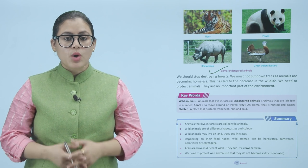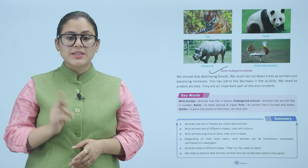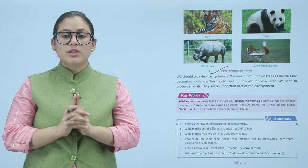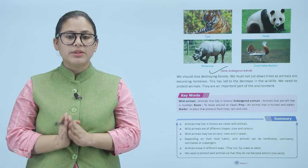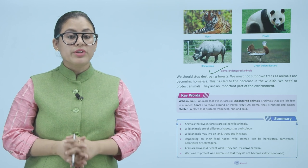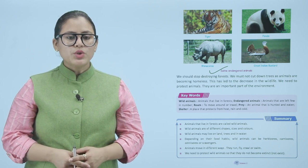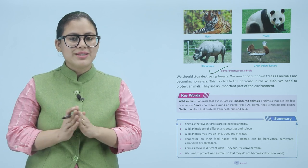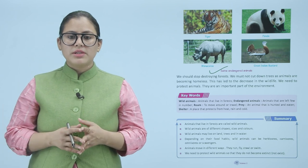Summary: Animals that live in forests are called wild animals. Wild animals are of different shapes, sizes, and colors. Wild animals may live on land, on trees, or in water. Depending on their food habits, wild animals can be herbivores, carnivores, omnivores, or scavengers. Animals move in different ways — they run, fly, crawl, or swim. We need to protect wild animals so that they do not become extinct.